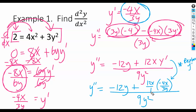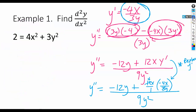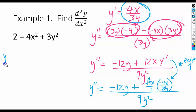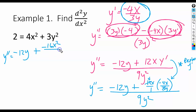By putting these things together: 4 times negative 4x gives me negative 16x, and on the bottom here I'm going to have a y. So y'' equals negative 12y, and then 4x times negative 4x is negative 16x squared. There's a y on the bottom because y times 1 is y. And then down here we have 9y squared.